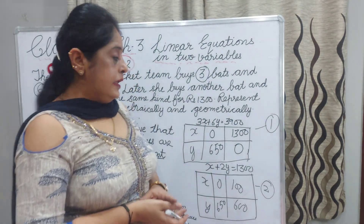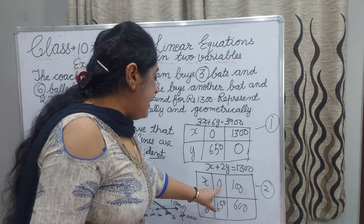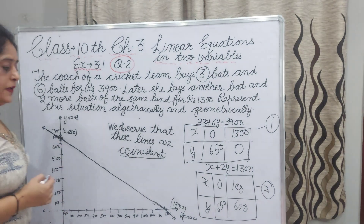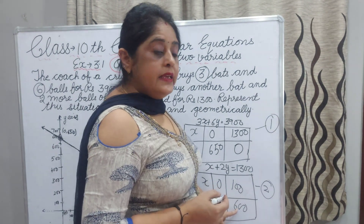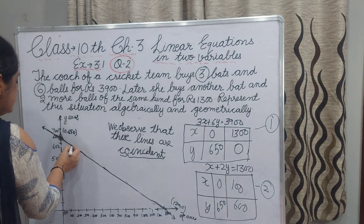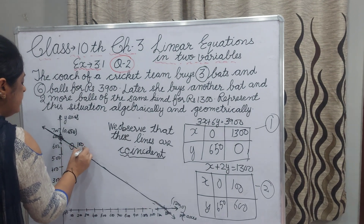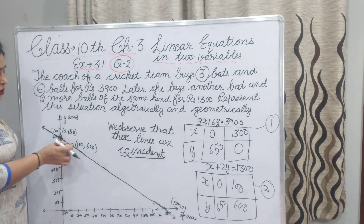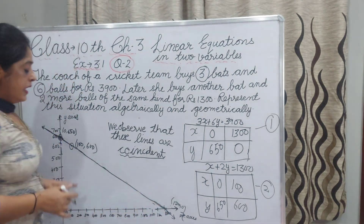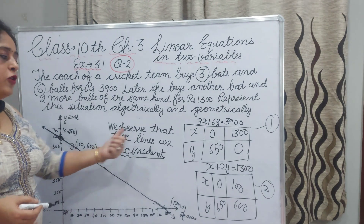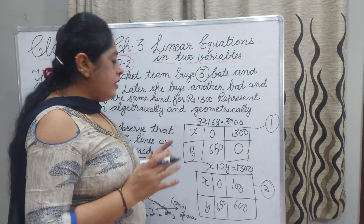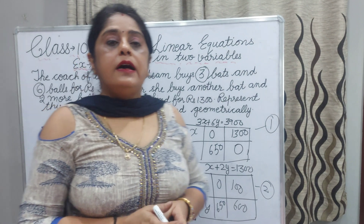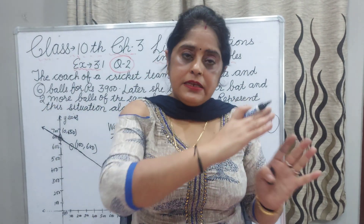For X plus 2Y equals 1,300: one point is common — X is 0, Y is 650. And the second point is X is 100, Y is 600. We match these two points and extend the line. We observe that these two lines are coincident — meaning when two lines lie on top of the same line they are called coincident, so they are the same line occupying the same space.